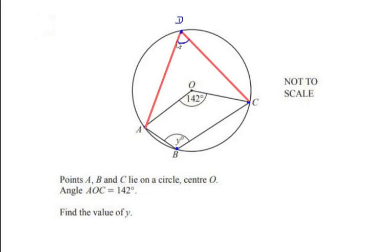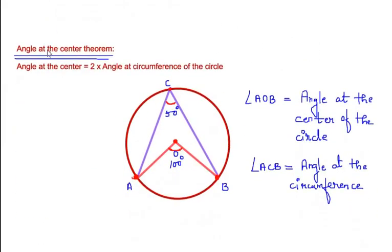Let us try to find out what is the angle at the circumference of the given circle. To get the value of this angle, we have to use a circle theorem known as the angle at the center theorem. It states that the angle at the center is two times the angle at the circumference of the circle. A and B are the points through which the angle at the center is made, and the same two points make an angle at the circumference at point C.